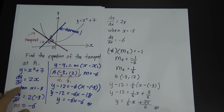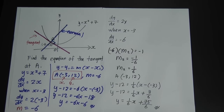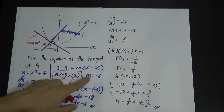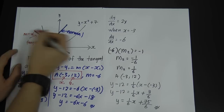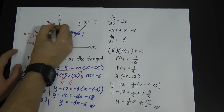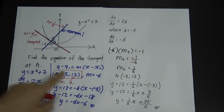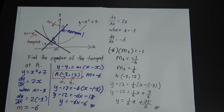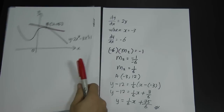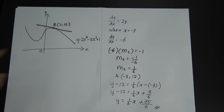So y equals 1 over 6 x plus 3 over 6 plus 12, which simplifies to 1 over 6 x plus 75 over 6. This is the equation of the normal line. You must understand the basic concept: the gradient of the tangent is negative 6, so the normal gradient is 1 over 6, because negative 6 times 1 over 6 equals negative 1, confirming they are perpendicular.